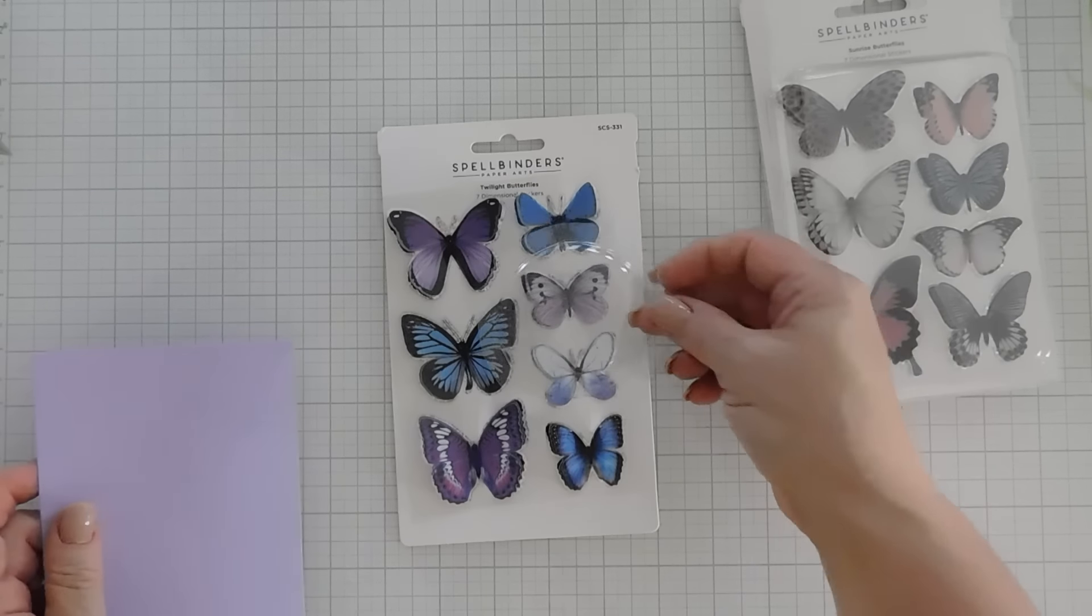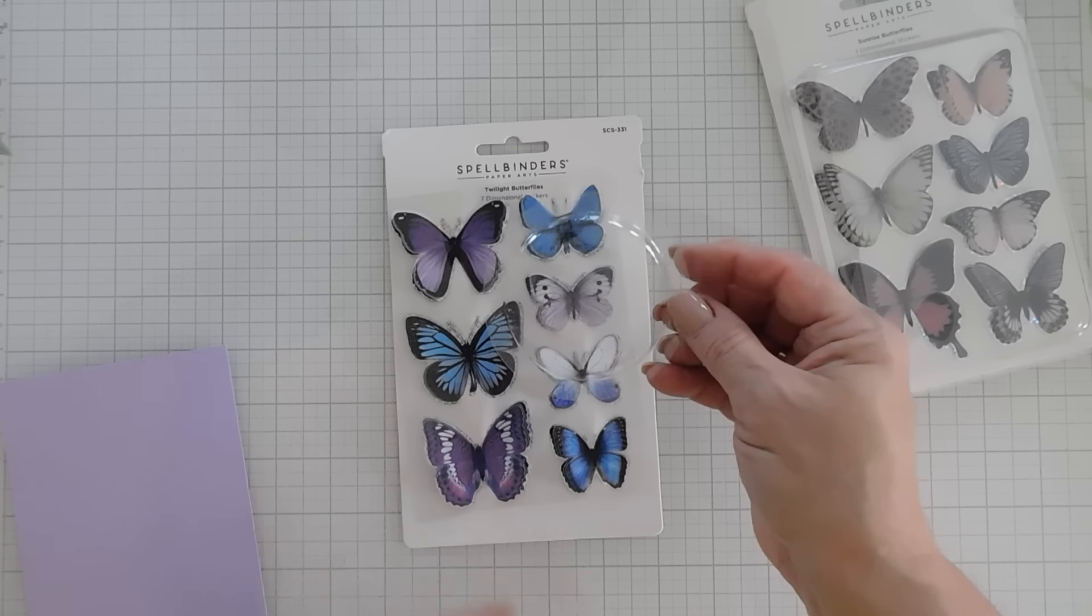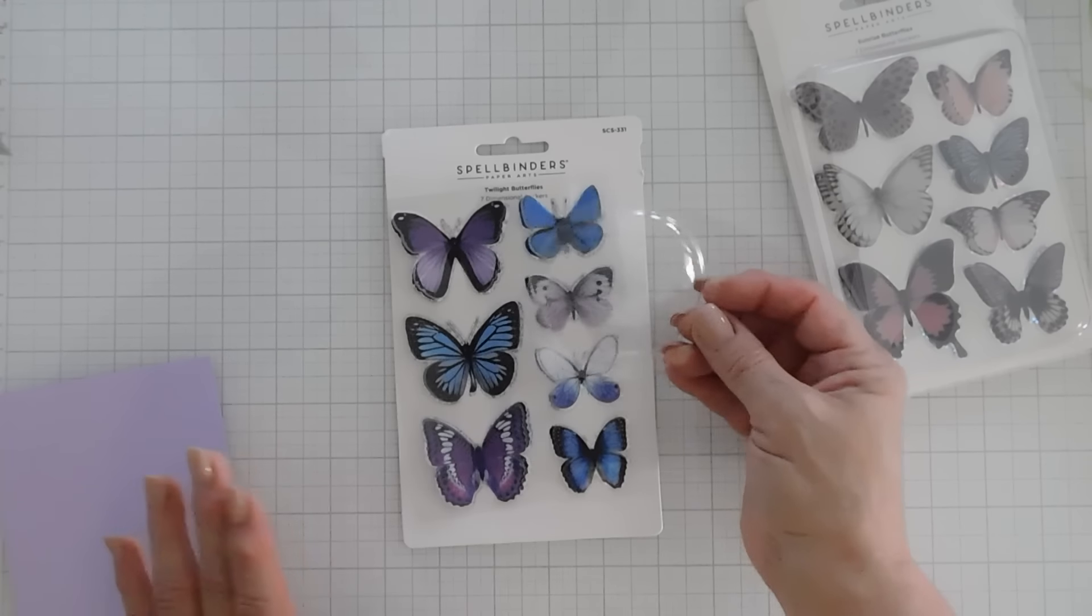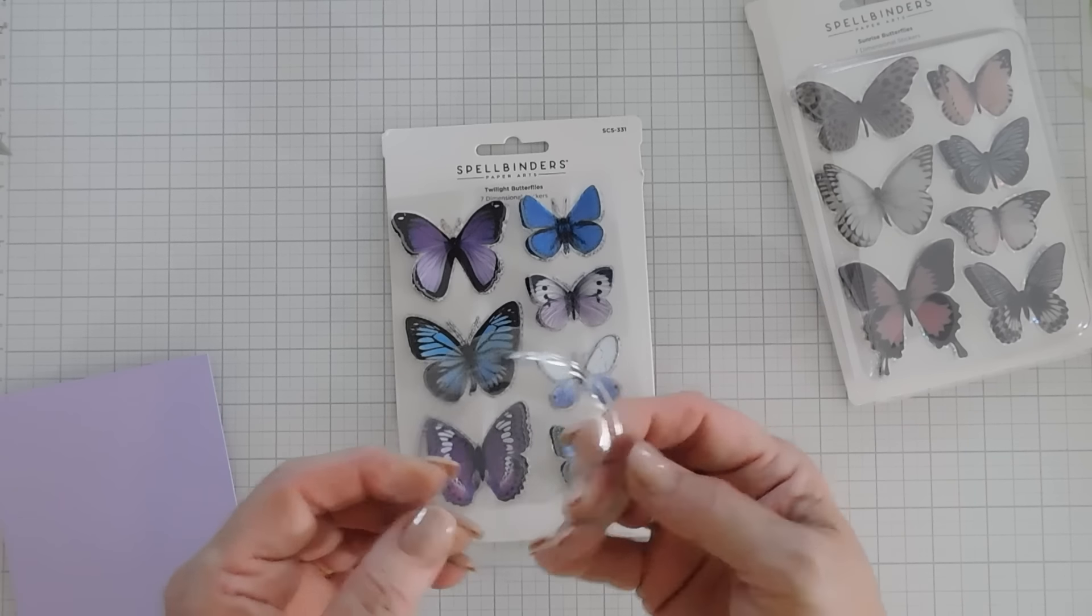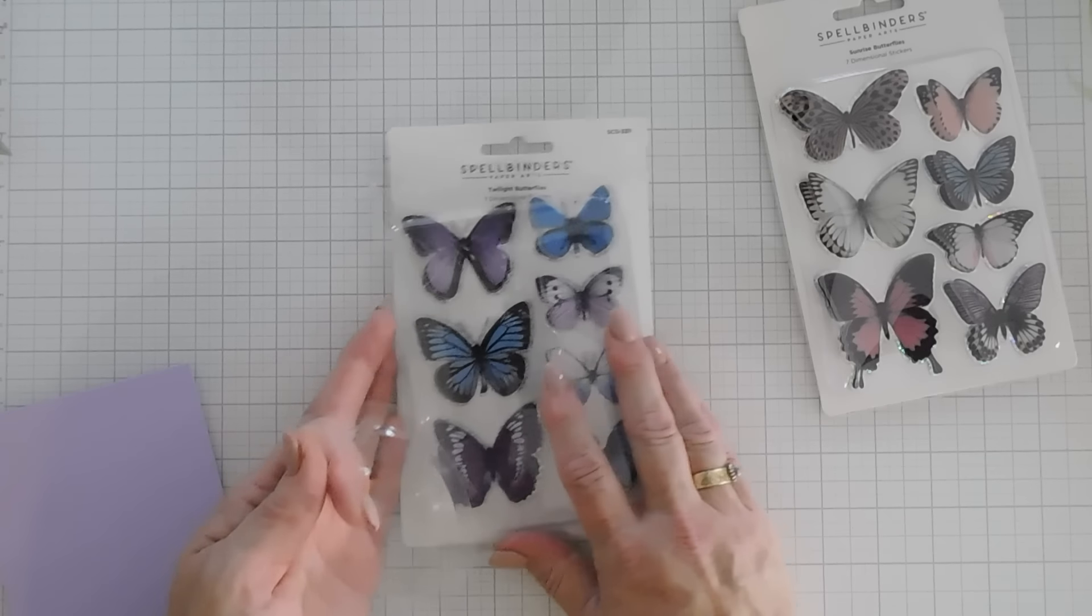There's seven stickers in here. They're dimensional, they're light and airy, and they're almost like an image on vellum. You can see here, and I thought we would put this in a shaker card.